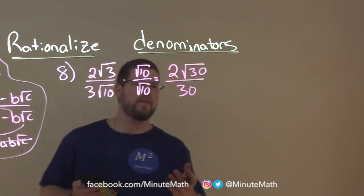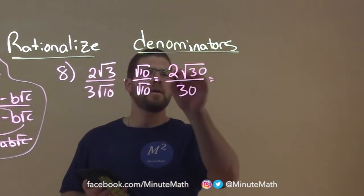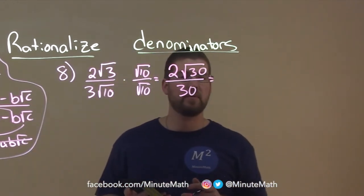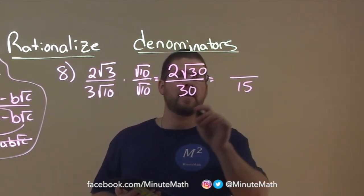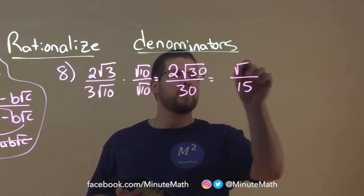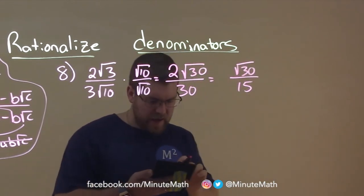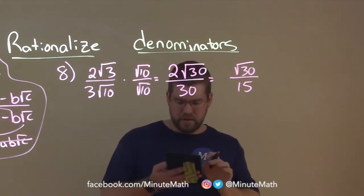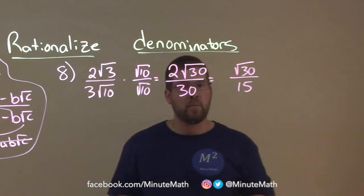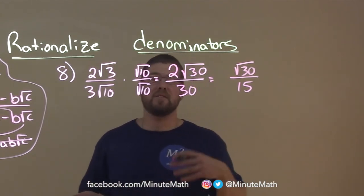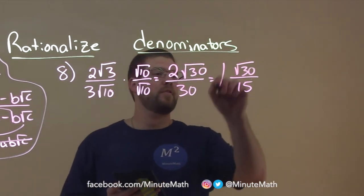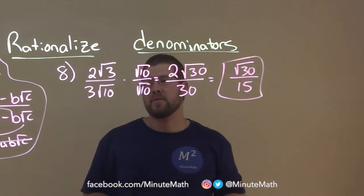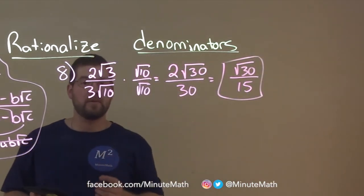So now we have to simplify this a little more. 2 and 30 simplify, well, to be 1 over 15. So 15 is the denominator. Don't really simplify any more. It's just 3 times 10. 10 is 2 times 5. Nothing pairs up. So we just have square root of 30 over 15 as our final answer. That's this expression, simplest form.